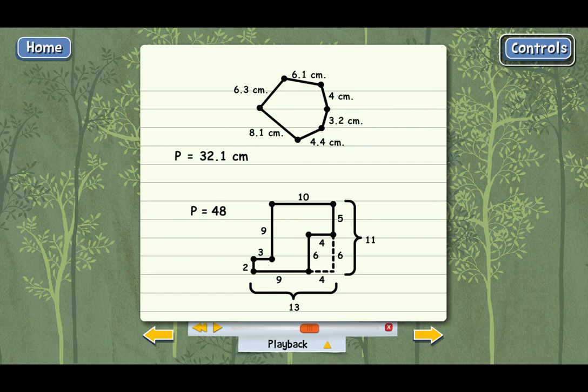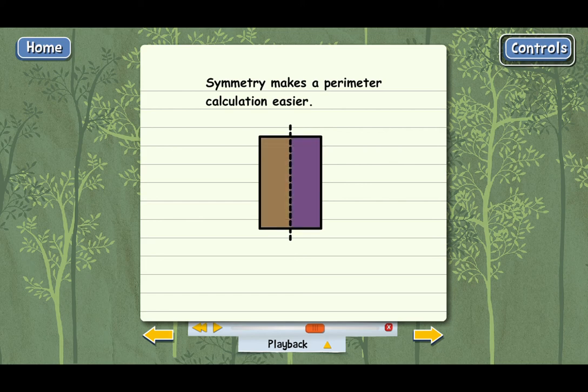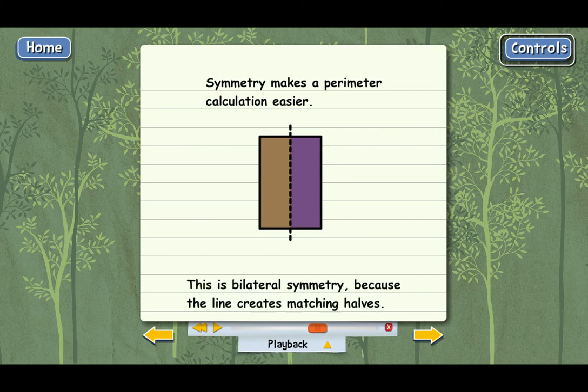One thing that makes a perimeter calculation a little easier is when the figure has symmetry. Symmetry means that the two sides of the figure match. They're mirror images of each other, actually. For instance, a rectangle has symmetry because you can run a line through the middle, like this, and it cuts the rectangle into two halves that match. You can cut a figure in half like this with a line, and the halves match up. Then that's called bilateral symmetry. And then the dashed line is called the line of symmetry.